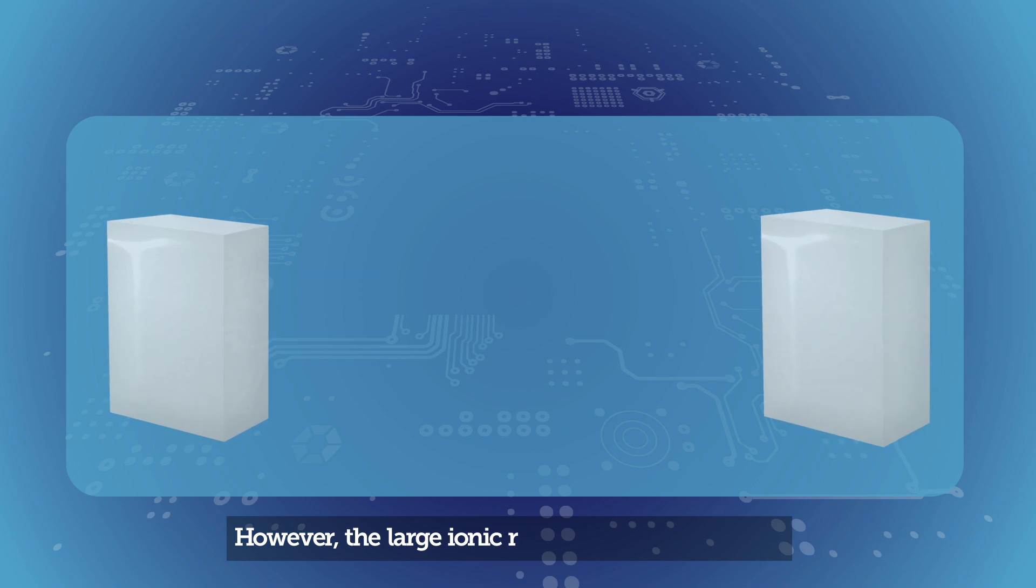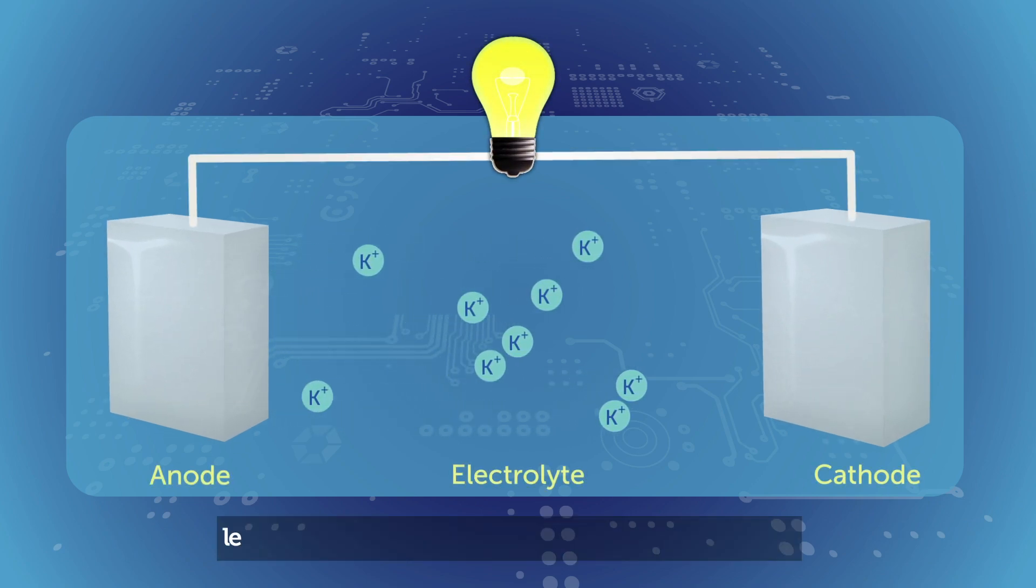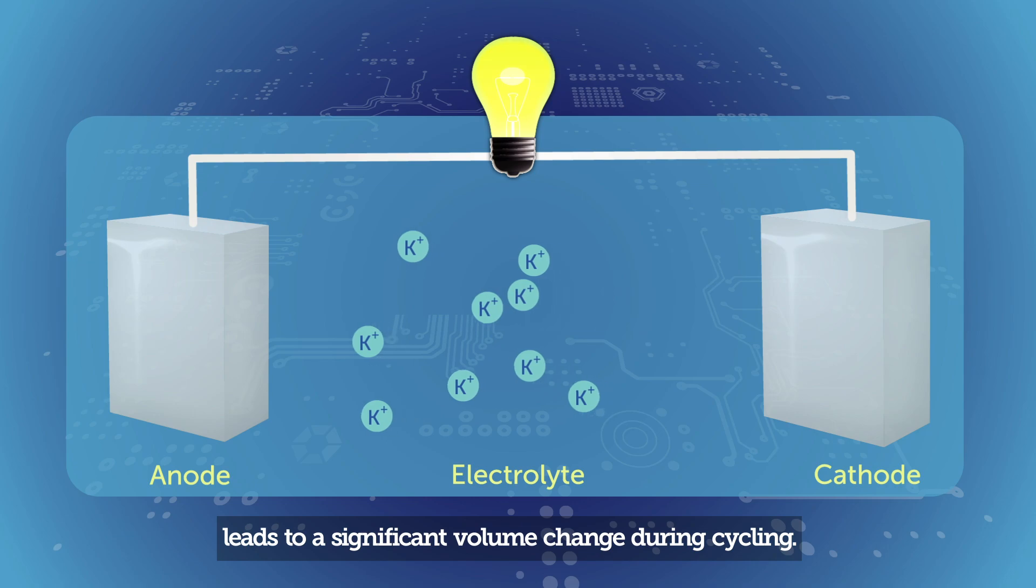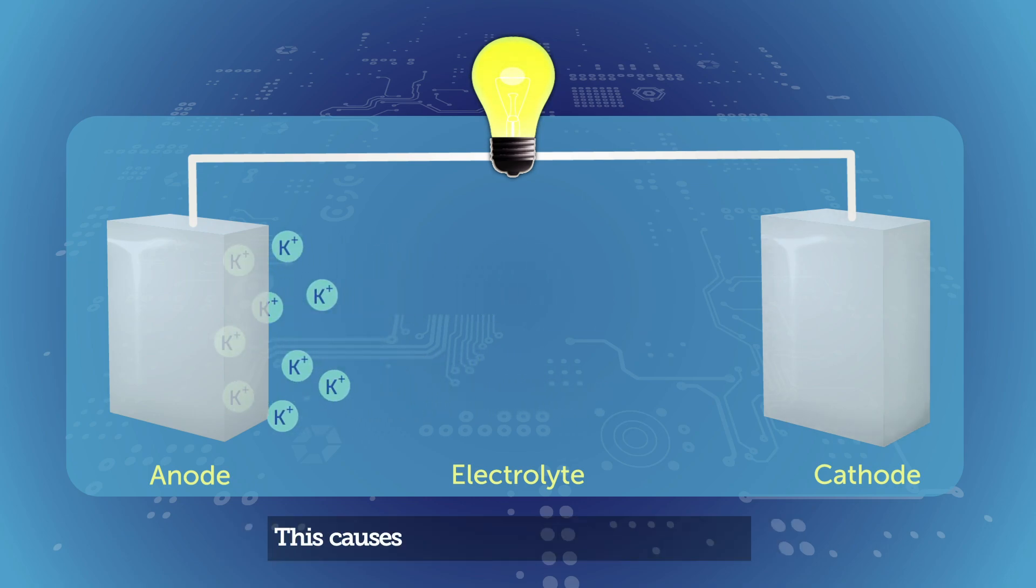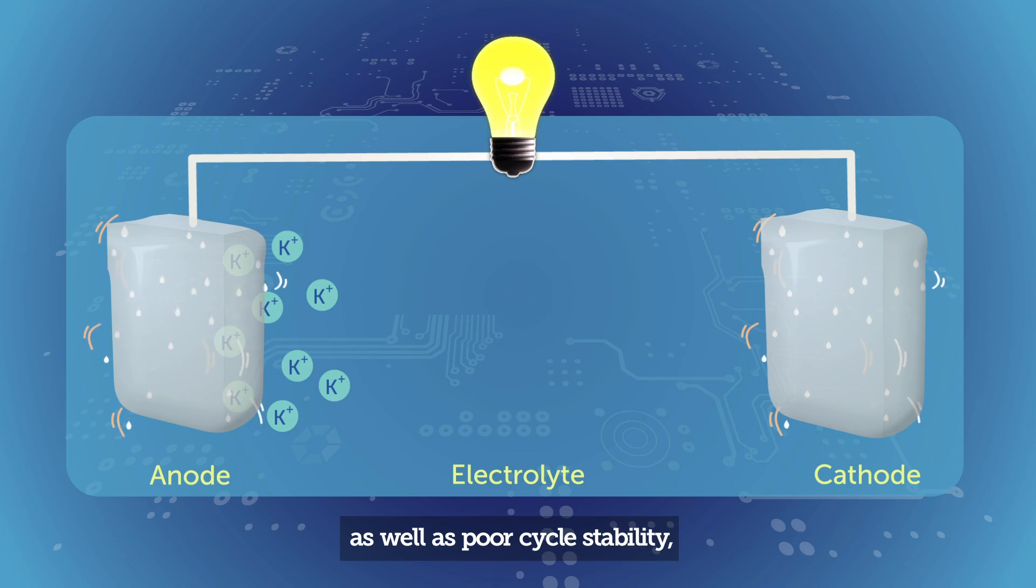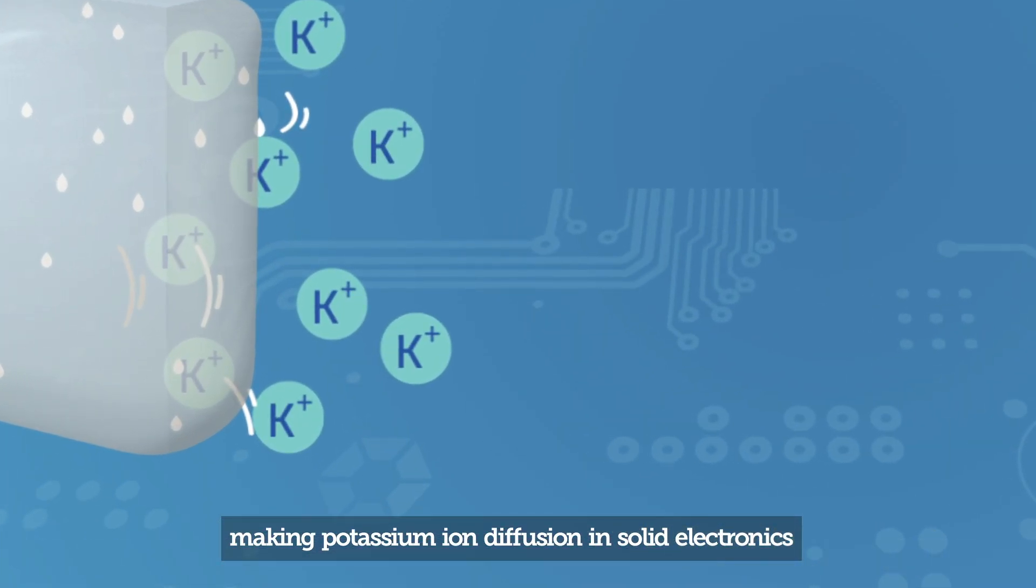However, the large ionic radius of potassium ions leads to a significant volume change during cycling. This causes severe structural deterioration as well as poor cycle stability, making potassium ion diffusion in solid electronics complicated and costly.